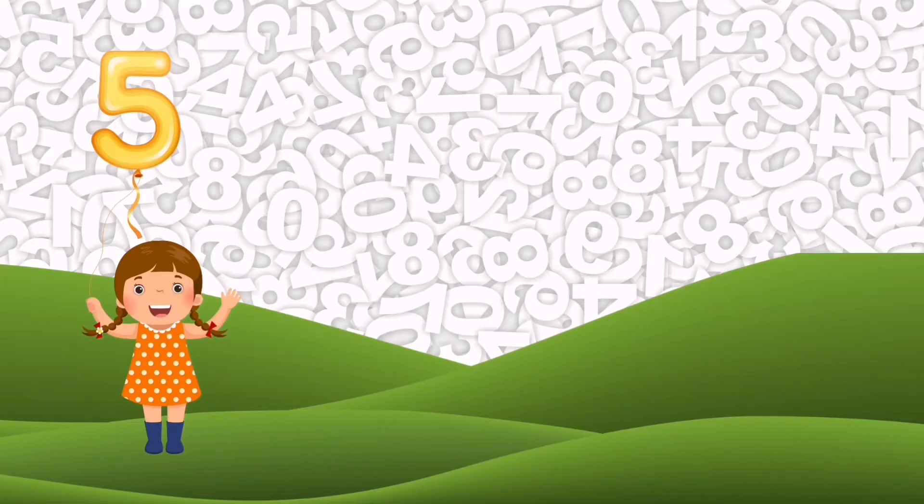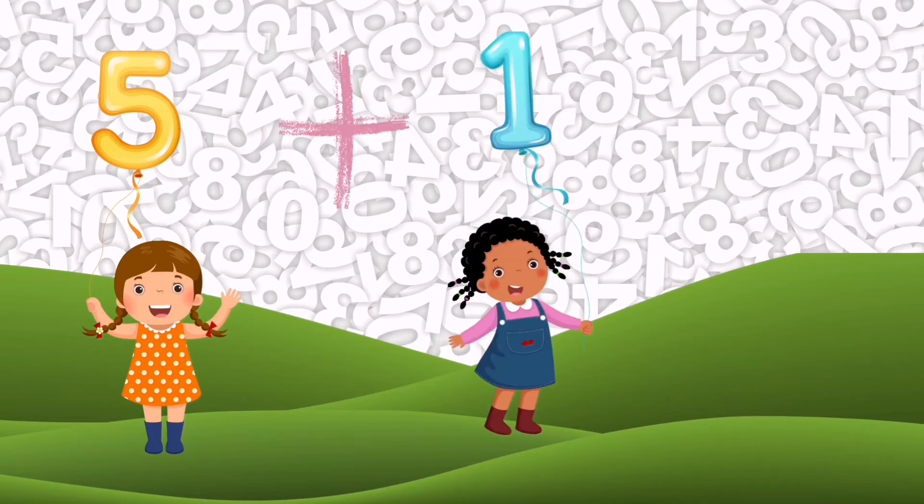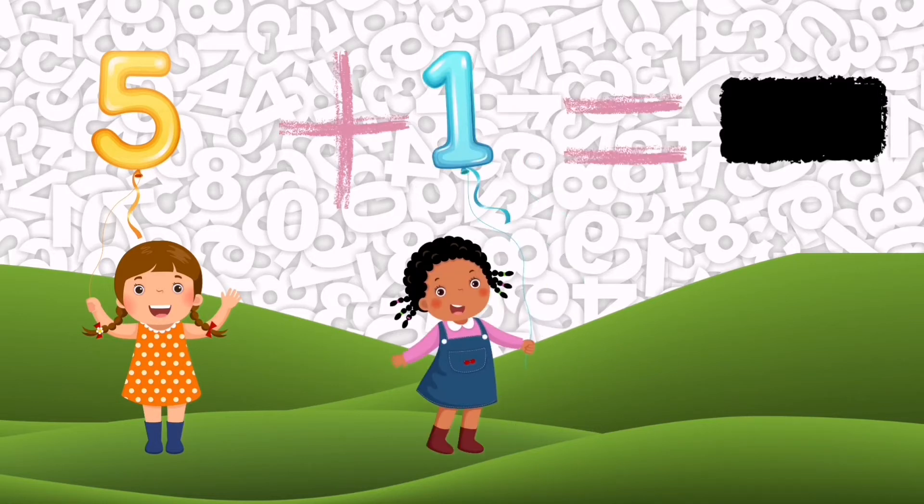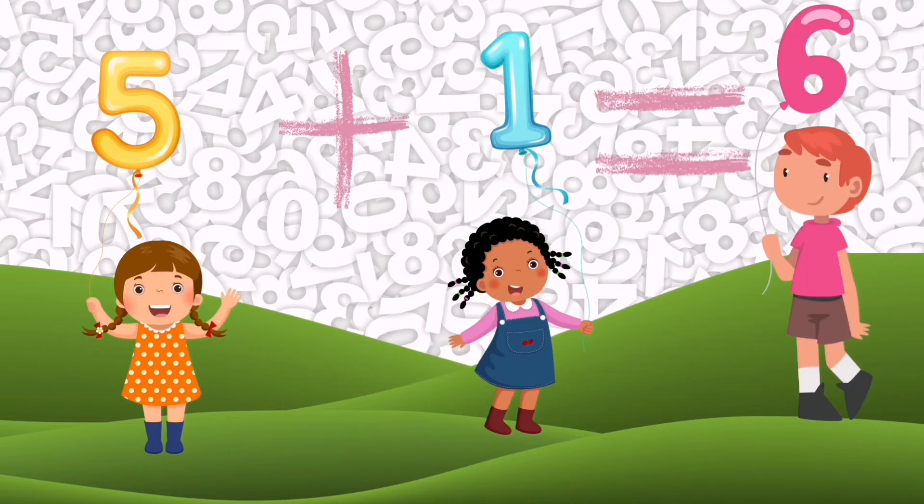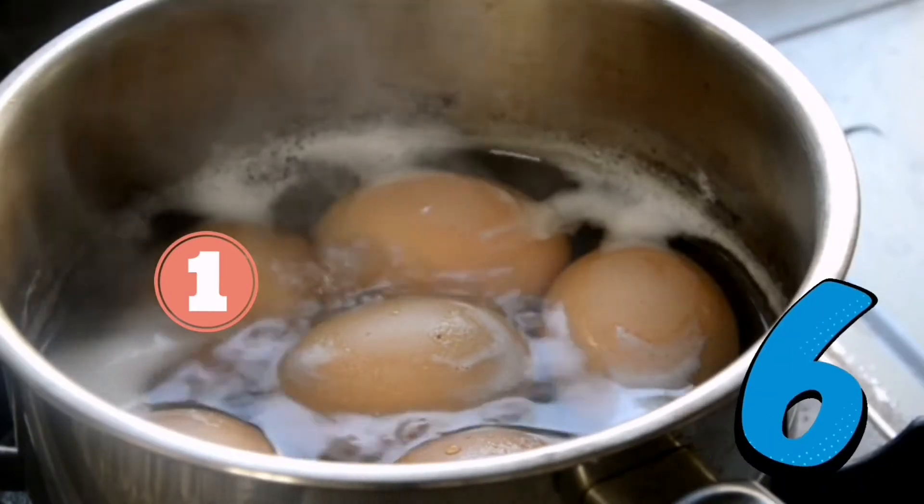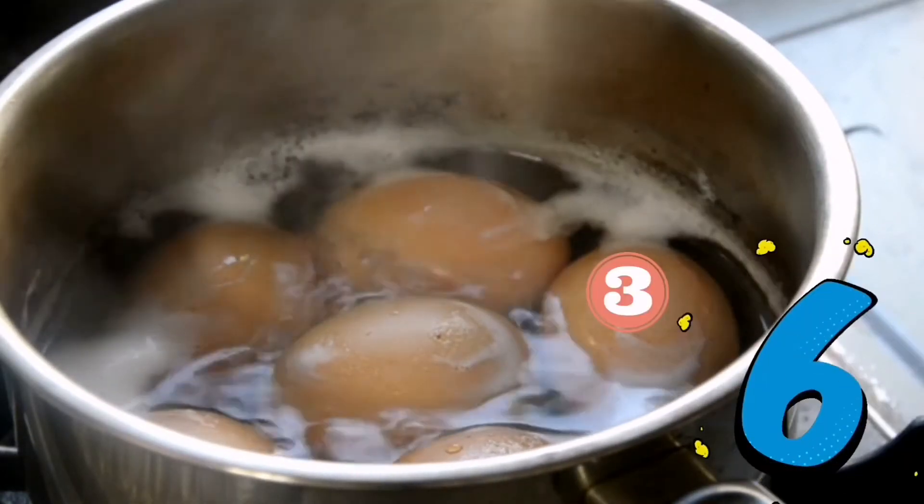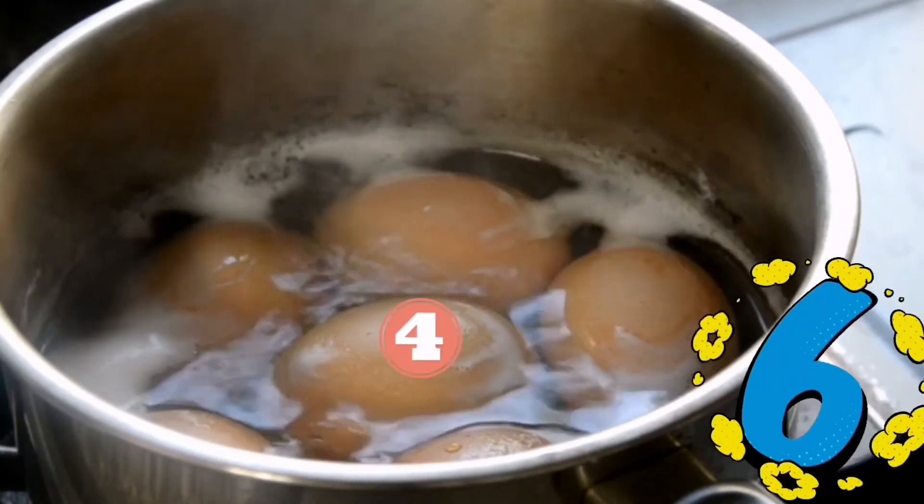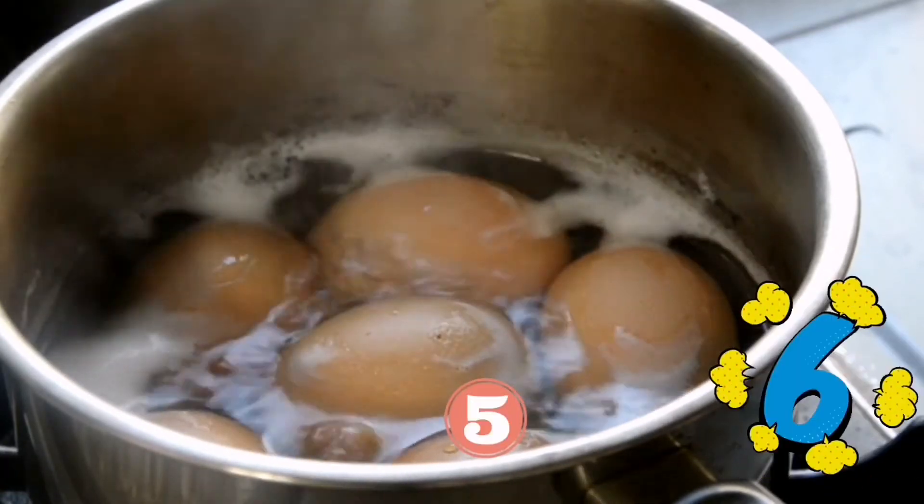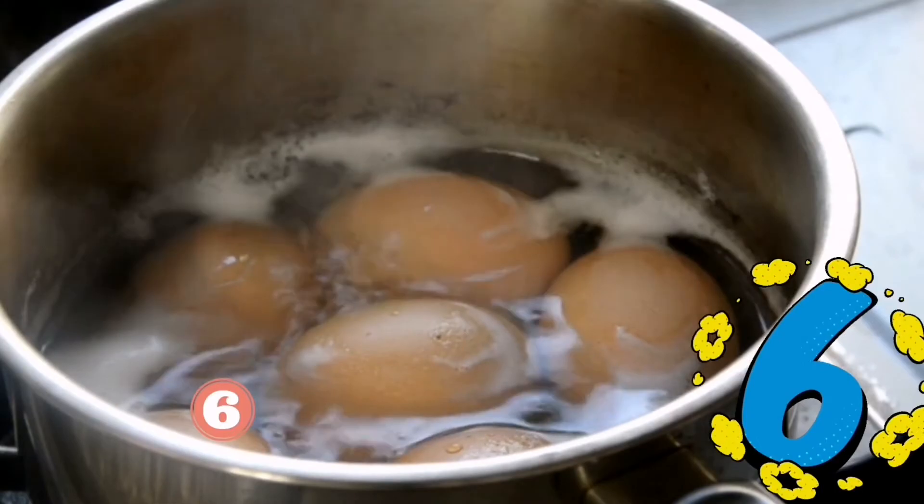5 plus 1 is equal to, what do you happen to know? 6, well done. And what do you know? 1 boiled egg, 2 boiled eggs, 3 boiled eggs, 4 boiled eggs, 5 boiled eggs, 6 boiled eggs. Yes,